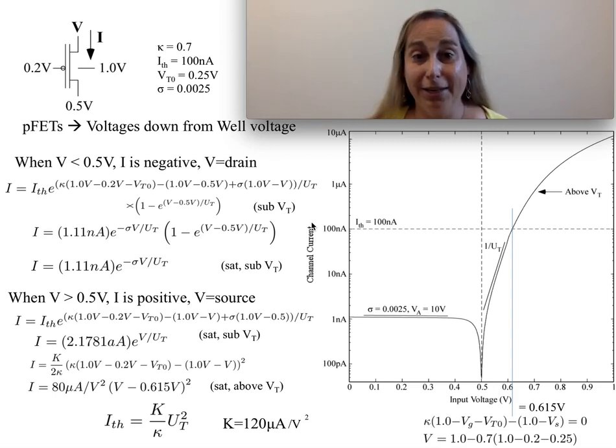I'd like to start by talking about an interesting circuit, really a device and configuration, and looking at what its voltage-current characteristics are. In particular, it's a straightforward PFET where I'm setting the gate and one of the source-drain junctions to half a volt, the well is at one volt, and we're going to take this voltage and look at it between zero and one volt.